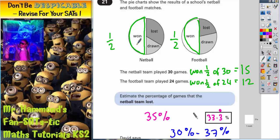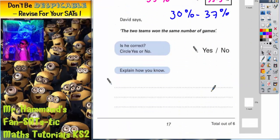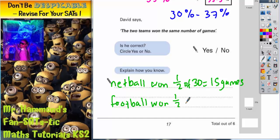they may have won the same percentage of games, but that does not mean they won the same number of games. Because netball won 15 and football won 12. So all you need to do is write this down here. So netball won half of 30 is 15 games. And football won half of 24, which is 12 games. So the answer is no, he is not correct because they won different amounts of games.